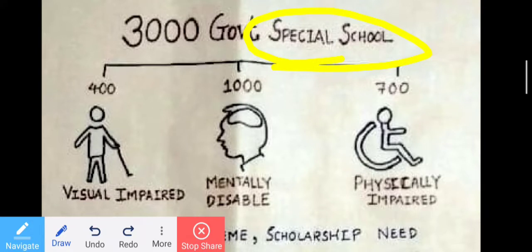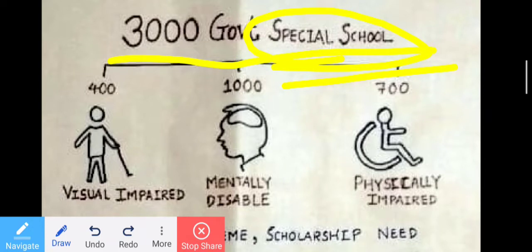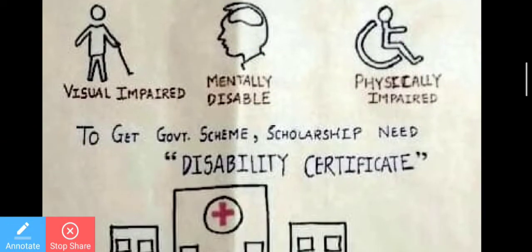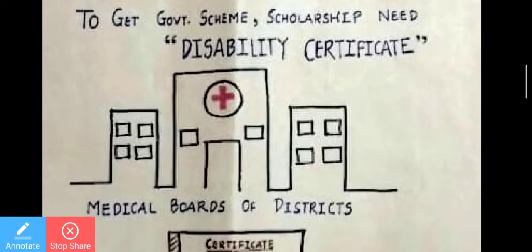Sarva Shiksha Abhiyan was in 2001-2002. At that time, 3,000 government special schools were opened: 400 schools for the visually impaired, 1,000 for the mentally disabled, and 700 for the physically impaired. The rest are for normal children. They will get scholarships, stipends, and medical facilities through a government disability certificate.